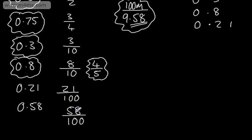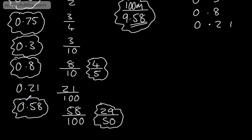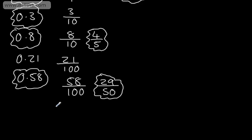If we look at this, it's not yet in its simplest form. I can see the numerator, which is the top, and the denominator, which is the bottom, can both be divided by 2. So that leaves me now 29 over 50, and that's in its simplest form. So we end up with 0.58 as a fraction in its simplest form, 29 fiftieths.